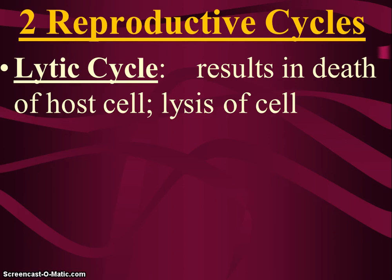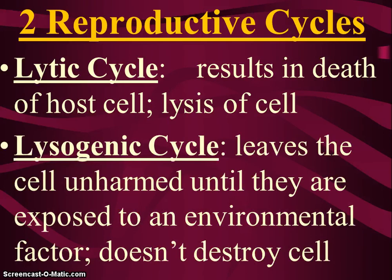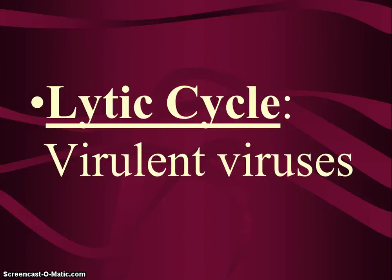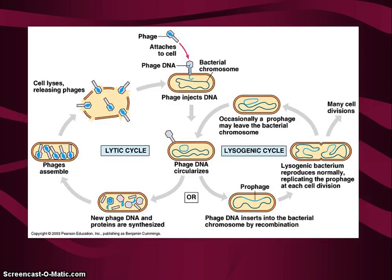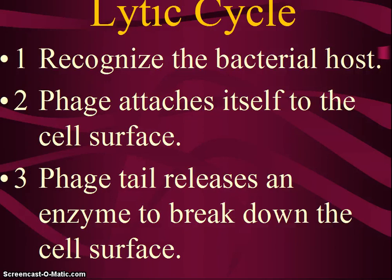There are two main reproductive cycles: the lytic cycle and the lysogenic cycle. The lytic cycle results in the death, or lysis, of the host cell. The lysogenic cycle leaves the cell unharmed until exposed to some type of environmental factor — it does not initially destroy the cell. Viruses that depend on the lytic cycle are typically called virulent viruses.